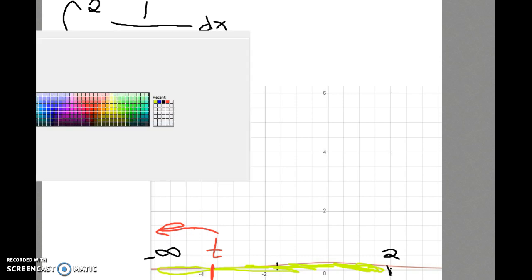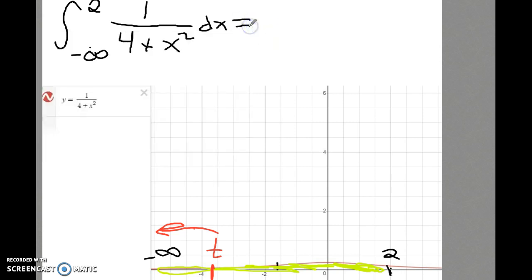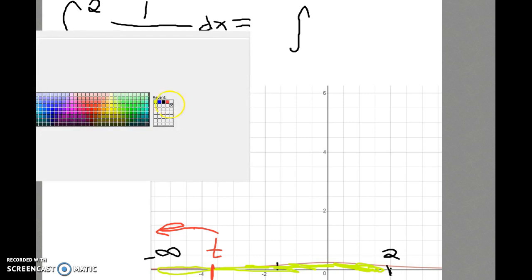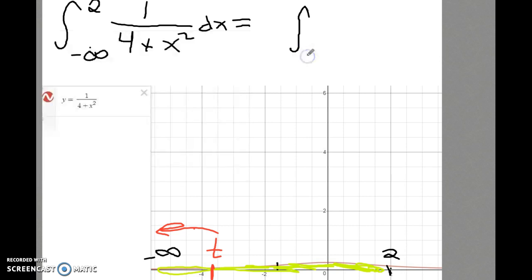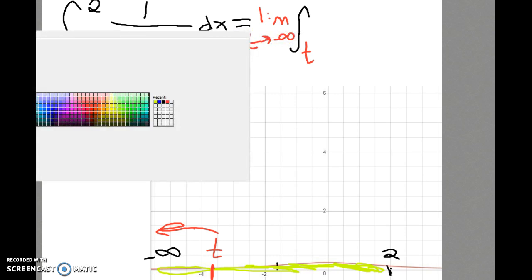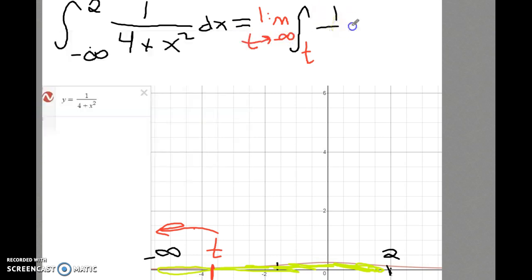We'd find the area from T to 2 as T approaches negative infinity. So that's the way we're going to express it: the integral from T to 2 with T approaching negative infinity. The integrand stays the same: 1 over 4 plus x squared dx.